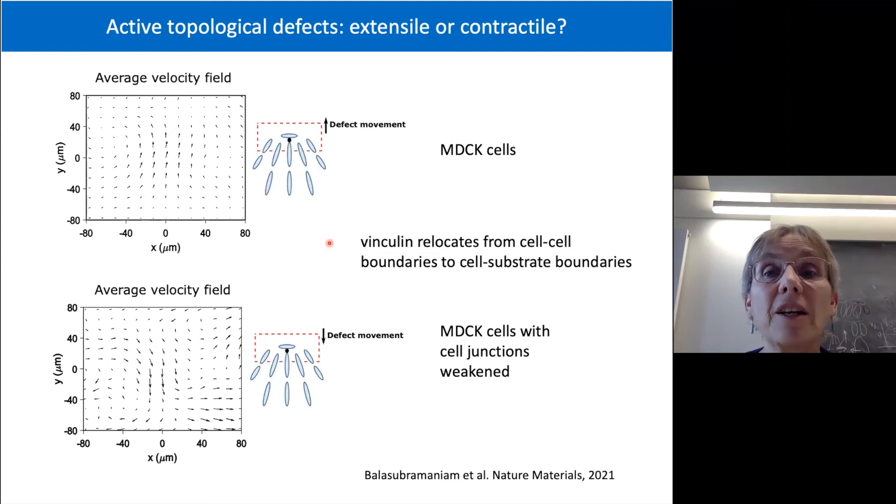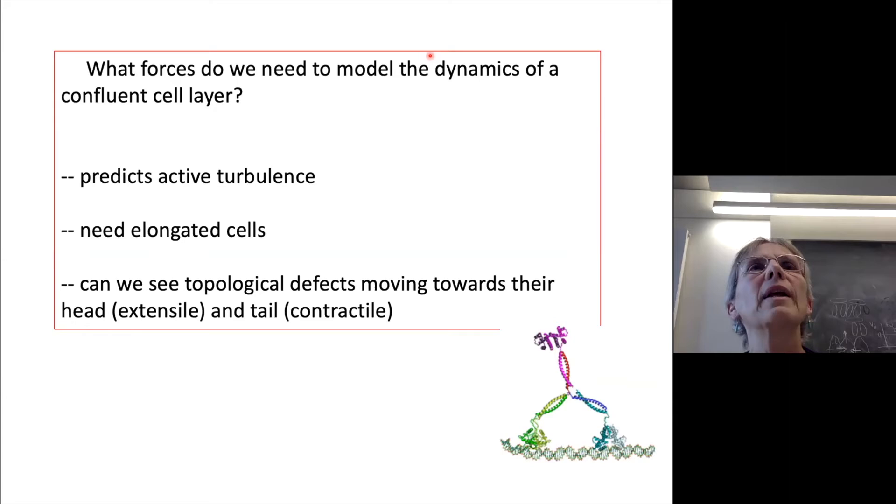So we've ended up with loads of questions. What are the forces you have to put in to get a minimal model of a confluent cell layer, sort of two-dimensional cell layer. And we want a model which predicts active turbulence. We know we need elongated cells. And we'd like to work out a way to get these topological defects. First of all, we have to find them. And then we have to have them moving towards their head and towards their tail. What do we have to change to change that? And that's quite a lot, it's going to have a pretty complicated model. Can we just do a simple model which gives us all these different things?